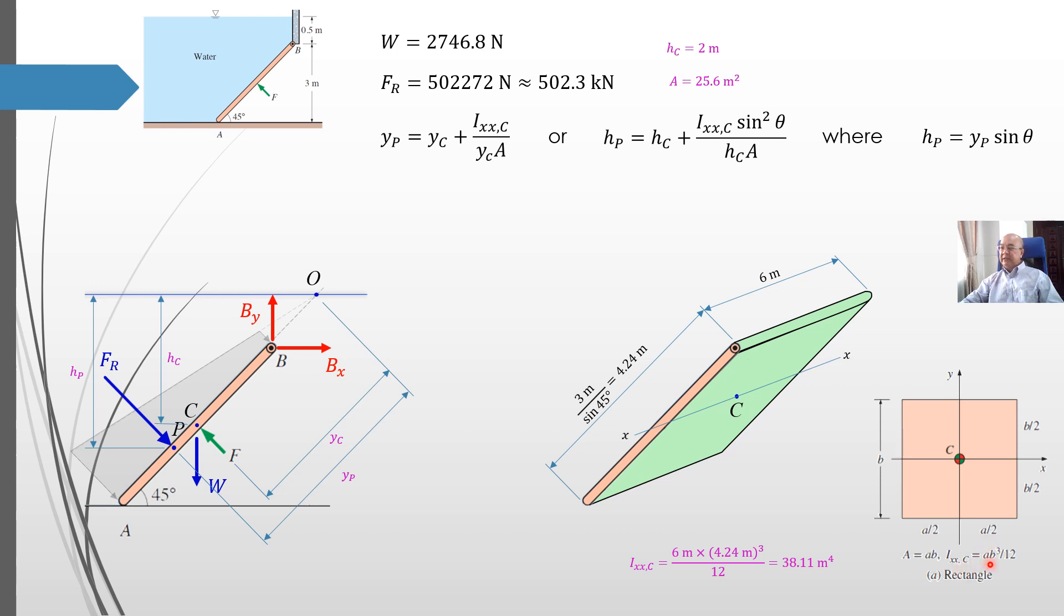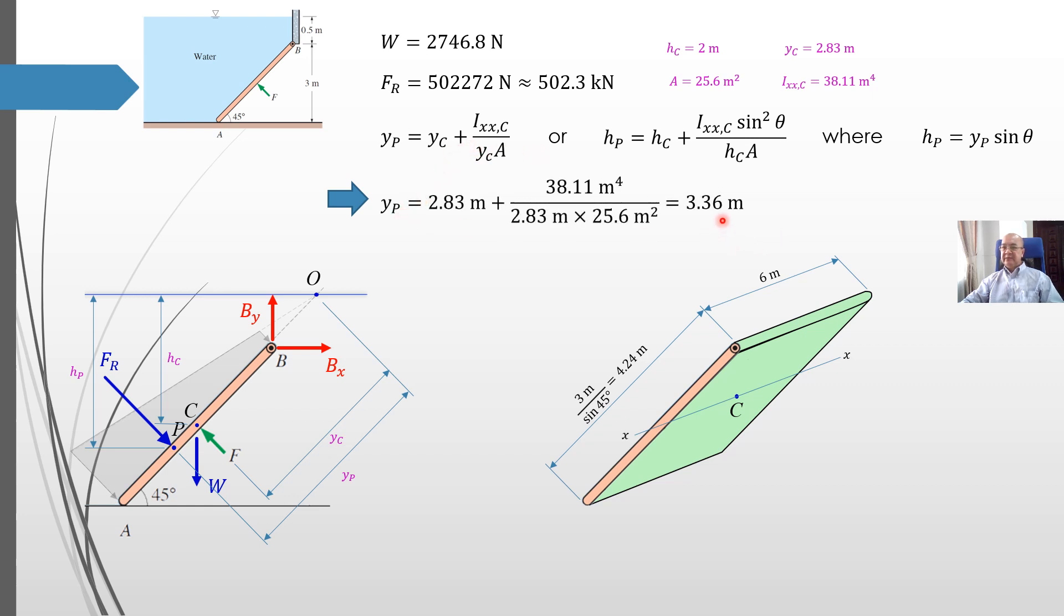So for our case, the A will be 6 meter, the B will be 4.24 meter. So the moment of inertia about axis xx passing through point C will be 38.11 meter to the power of 4. Yc can be calculated knowing AC. We have calculated previously AC equal to 2 meters. So Yc will be 2 over sin 45, which is 2.83 meter. So we have all the components to calculate this one. We put all the values, we obtain Yp equal to 3.36 meter.